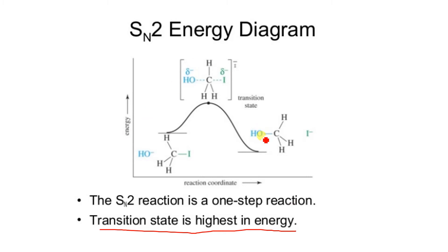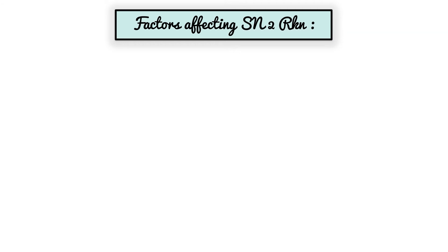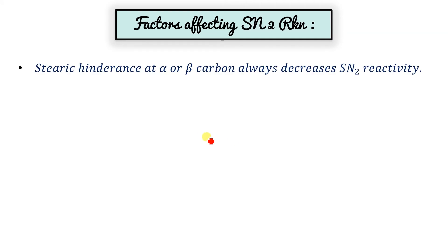Factors affecting SN2: steric hindrance at the alpha or beta carbon always decreases SN2 reactivity. In SN2, the nucleophile attacks from the backside; if there is steric hindrance, it will not allow the nucleophile to attack from the backside, and hence SN2 reactivity will be hindered.